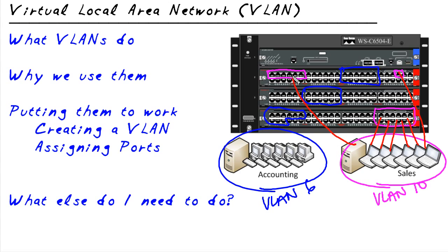The server — we'll put the server up there. The accounting devices, plug them into the blue ports, and the server into a blue port, and we're set. That's why they call it a virtual local area network: we have one physical switch, but we're carving it into different chunks. So virtually, logically, we're keeping all the accounting traffic and the sales traffic completely separate from each other.